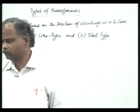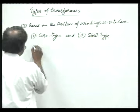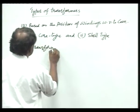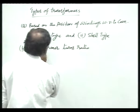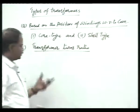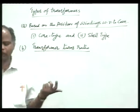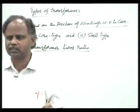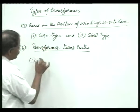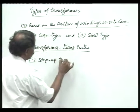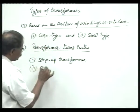The second criterion for classifying transformers is the transformer's turns ratio, which is Np upon Ns, where Np is the primary number of turns and Ns is the secondary number of turns. Based on this Np to Ns ratio, we classify transformers into two types: step up transformer and step down transformer.